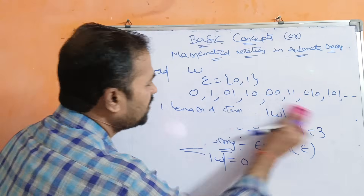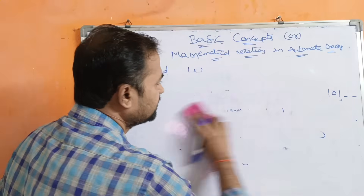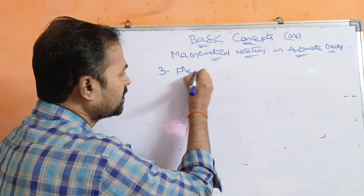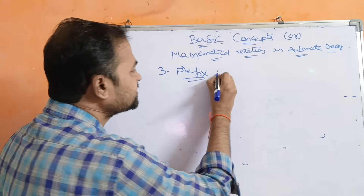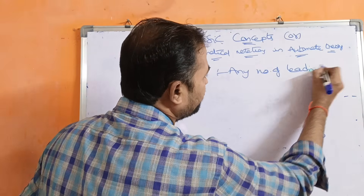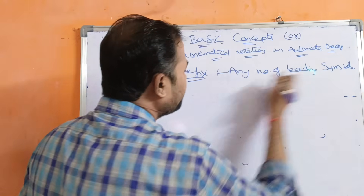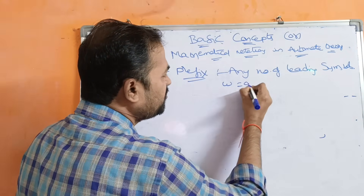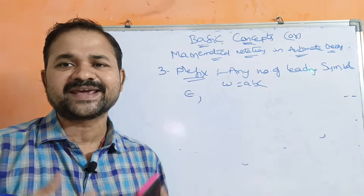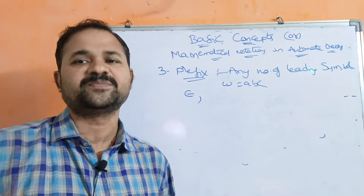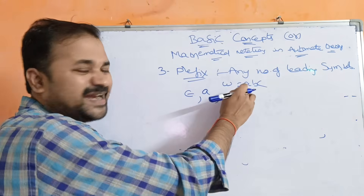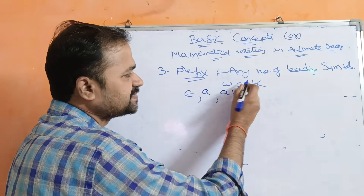Now let us see some more terminologies on strings. The next one is prefix of a string. A prefix means any number of leading symbols. For example, if W = ABC, then the prefixes are: epsilon (since ABC can be written as epsilon·ABC·epsilon), A, and AB.